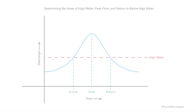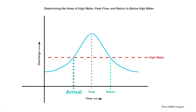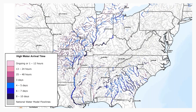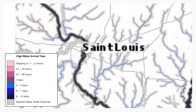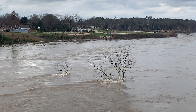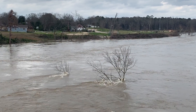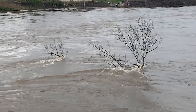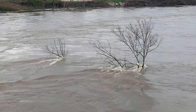The high water arrival time is depicted on this example hydrograph. The peak flow time and the estimated high water end time are also depicted. Clicking a stream reach reveals timing details that can be very useful for decision support messaging. Also available are the estimated high water flow threshold value and maximum flow during the forecast period.